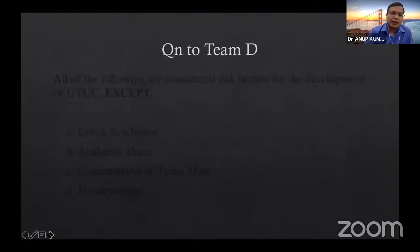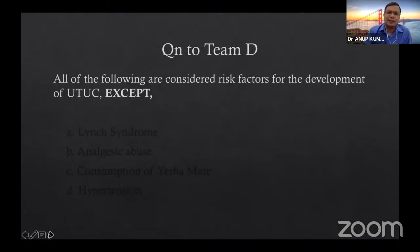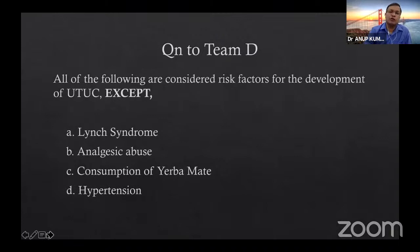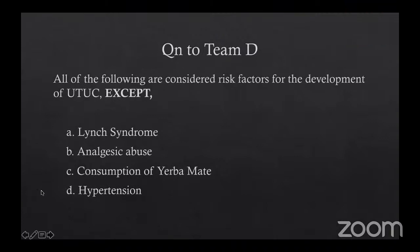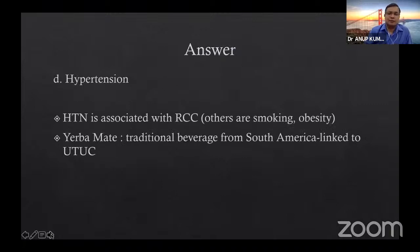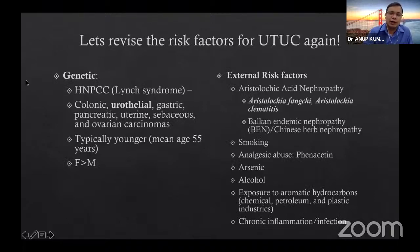Question 4 to Team D: All of the following are risk factors for upper tract carcinoma EXCEPT — Lynch syndrome, analgesics, consumption of herbs, or hypertension. Team D answers D — hypertension — which is correct. Remember hypertension is associated with RCC, not upper tract urothelial carcinoma. Lynch syndrome, analgesics, and Chinese herbs are all genuine risk factors.